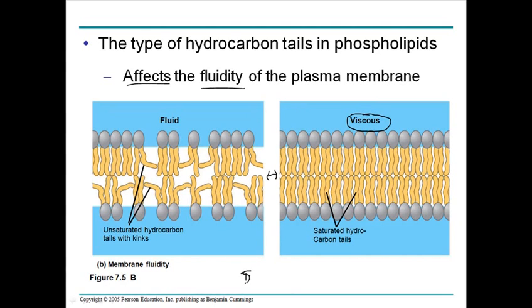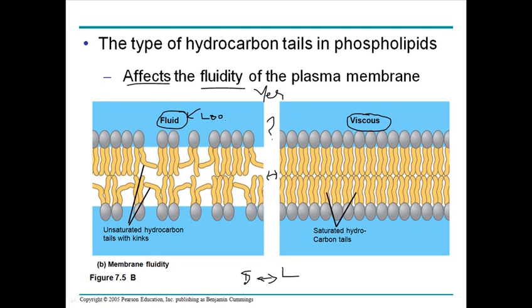Just like lipids in general can exist in a solid state (like butter) or liquid state (like olive oil) and transition between them with heat, the cell membrane can also transition between a fluid state and a viscous or crystalline state. In the fluid model, phospholipids are loosely packed with gaps between them. In the viscous or crystalline model, phospholipids are packed very tightly.